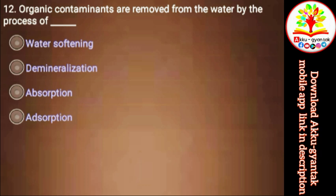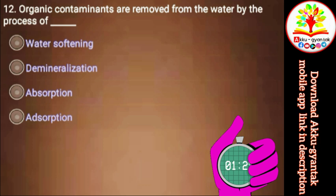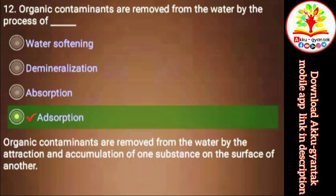Organic contaminants are removed from water by the process of ______. a) Water softening, b) Demineralization, c) Absorption, d) Adsorption. Right.